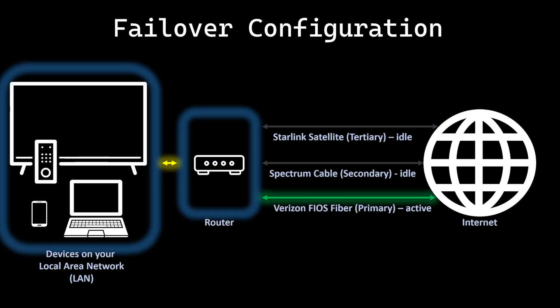Once you have a capable router you can usually set it up for failover or aggregation. Failover is exactly what it sounds like — you designate a connection as your primary and specify the order of utilization of the rest. If you have two connections you'll have a primary and a secondary or backup. This is a good configuration if the performance of the connections isn't comparable, especially regarding latency, or if one connection has metered data usage like many cellular and satellite plans.